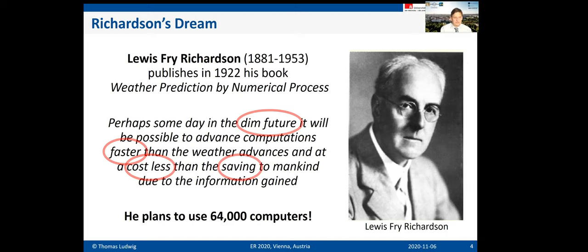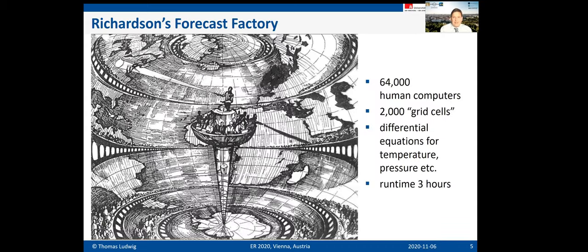Richardson conceived a concept for computing this prediction and planned to use 64,000 computers — writing what amounted to a parallel program with message passing and load balancing. But wait — 1922, we had no electronic computers. We did have human computers, and Richardson invented what is called Richardson's Forecast Factory, where he conceived a globe-shaped computer room representing the Earth.